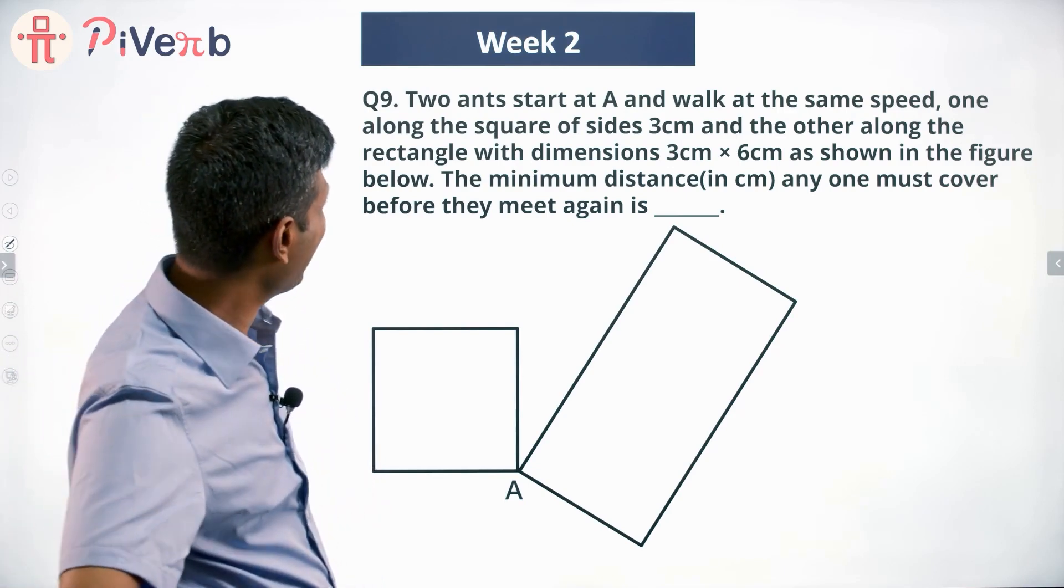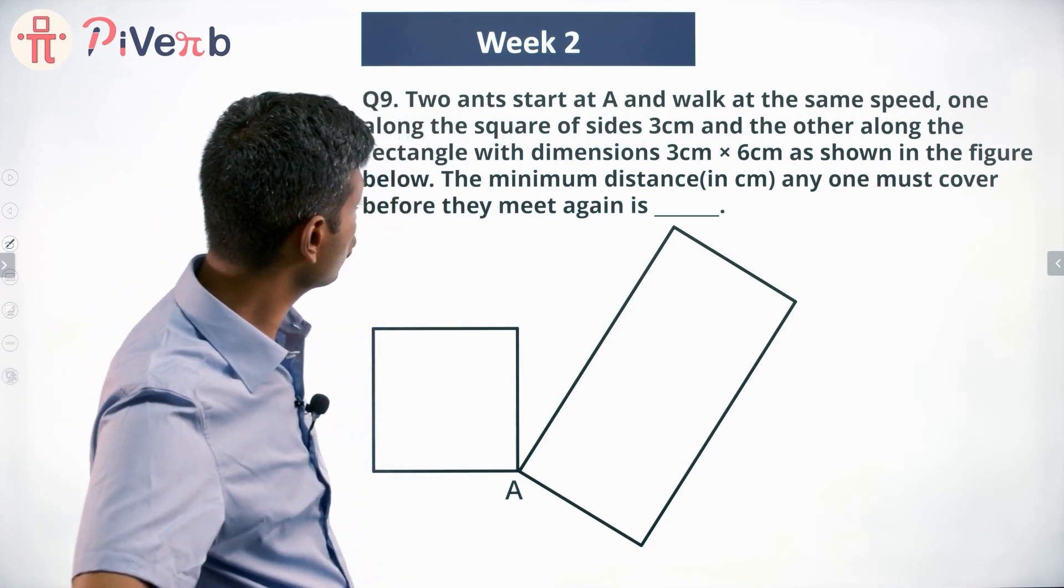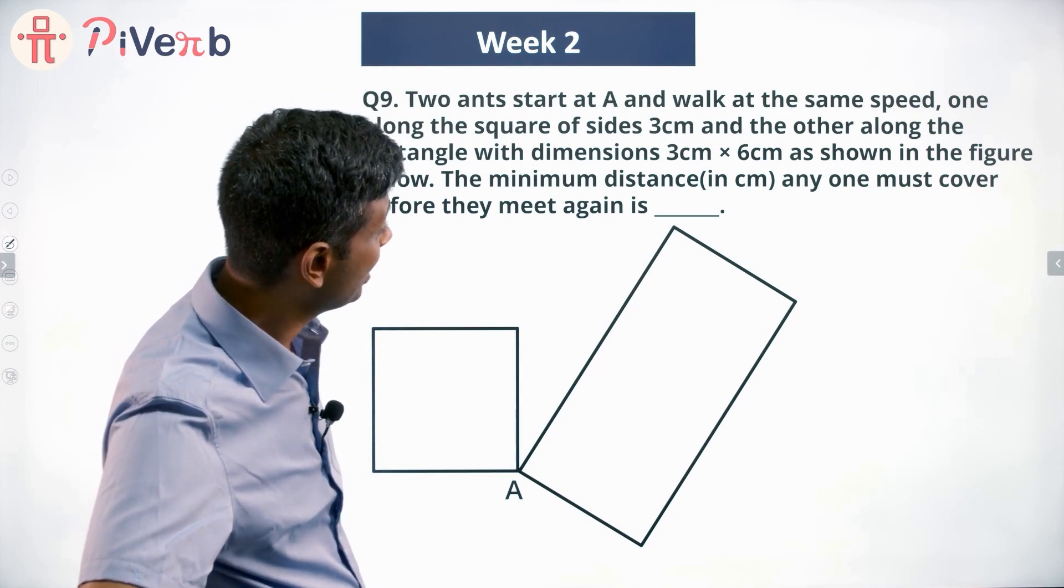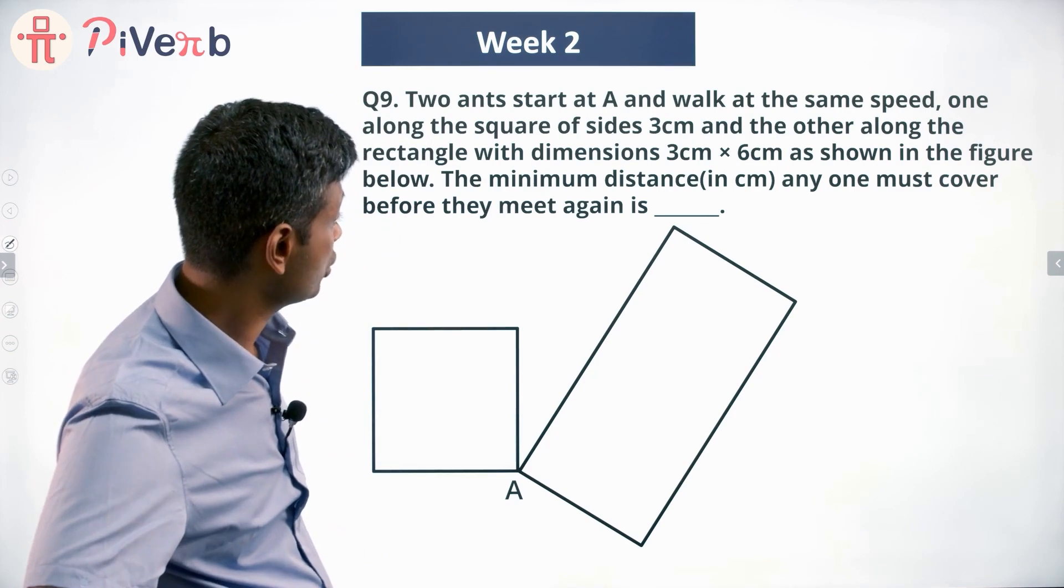This one. Two ants start at A and walk at the same speed, one along the square of sides 3 cm and the other along the rectangle with dimensions 3 by 6 cm as shown in the figure.